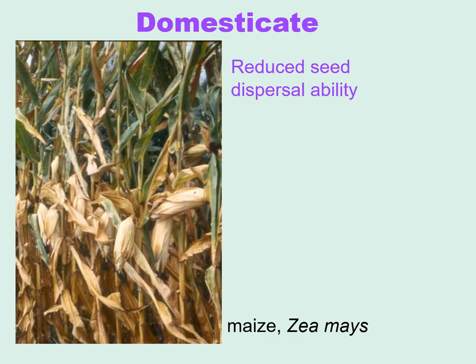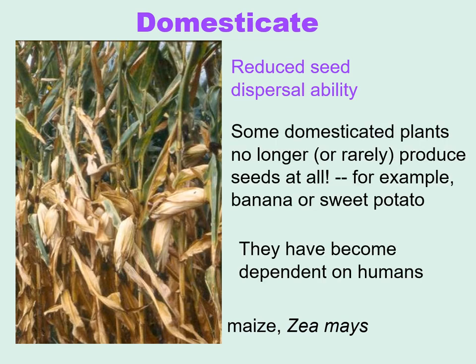Most domesticates have some kind of reduced seed dispersal ability. For example, the ears of maize are covered in a husk, and although if this fell to the ground you could get a clump of maize, it would not be very successful. Some domesticated plants no longer or rarely produce seeds at all — for example, bananas and sweet potatoes. These plants have become dependent on humans.